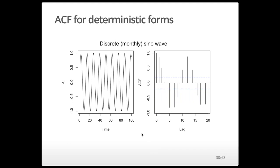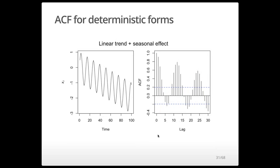Here's the ACF for a discrete sine wave with a period of 12 values repeated every year. As mentioned, the ACF of a periodic function is itself periodic. We see strong positive correlation at lags that are multiples of 12 — peaks correlated with peaks — and strong negative correlation at a lag of 6, where a peak lines up with a trough. For a linear trend plus seasonal effect, the ACF is a damped periodic function, showing an overall decrease in the amplitude of peaks as we move through time.